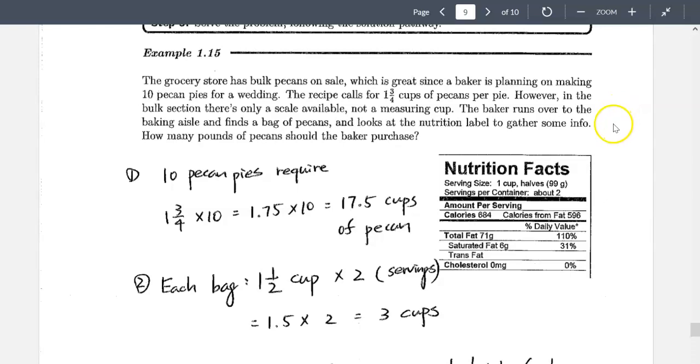Then how many pounds of pecans should the baker purchase? So, the first thing we need to figure out is, okay, so we want to know how much pecan we need to buy. He or she wants to bake 10 pecan pies. And each one, the recipe calls for one and three-fourth cups. So let's find out how many cups of pecan we need in total to bake these 10 pecan pies. So we take one and three-fourth times 10 equal to 17.5 cups of pecan. That's how much we need.